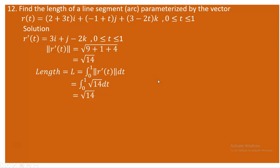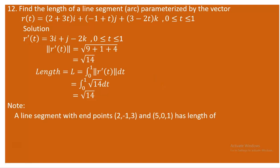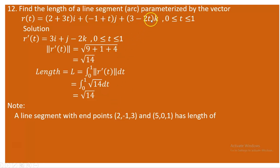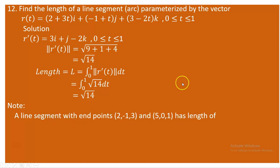There is another way to verify this. This is essentially a line segment between two points. When t = 0, the point is (2, -1, 3). When t = 1, the point is (2 + 3, -1 + 1, 3 - 2) = (5, 0, 1). So we are calculating the length of the segment between (2, -1, 3) and (5, 0, 1).